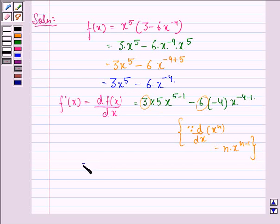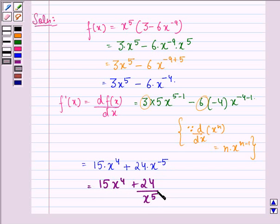On simplifying this we get 15 into x raised to power 4 plus 24 into x raised to power minus 5, and this can be written as 15 into x raised to power 4 plus 24 divided by x raised to power 5. So this is our answer to the question.